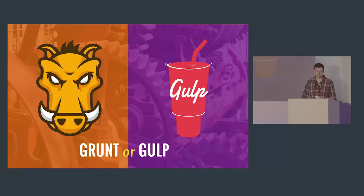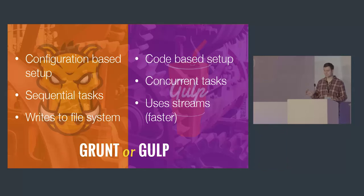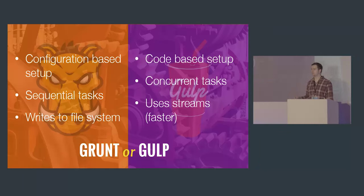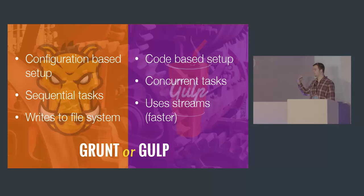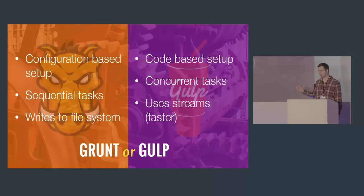Two of the most popular are Grunt and Gulp, and at this stage they're both fairly mature but with a couple of differences. Grunt is more configuration-based whereas Gulp is more code. Grunt runs tasks sequentially — one after the other — whilst Gulp tries to run tasks concurrently. Grunt writes all output back to the file system each time, whereas Gulp runs it in streams, which is actually faster.